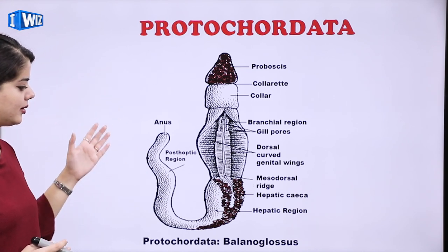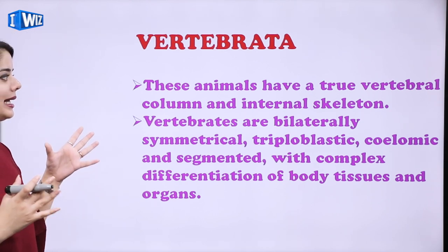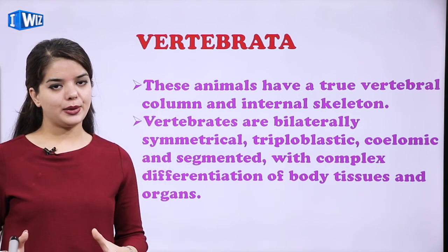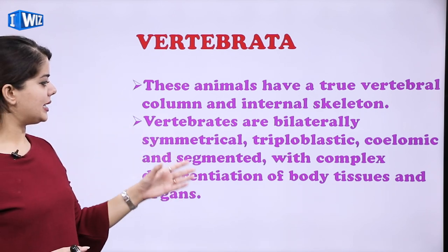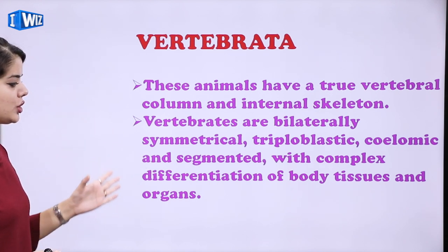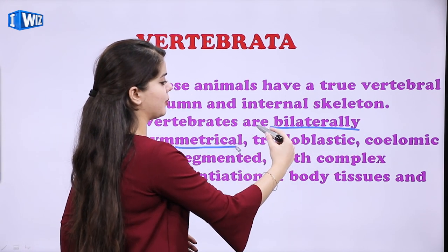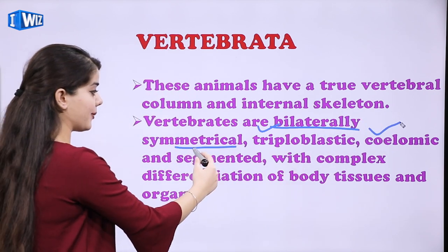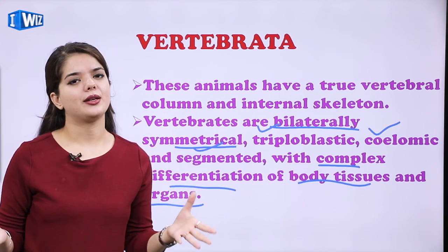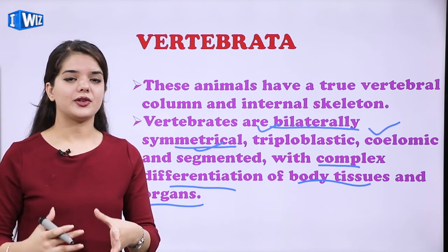Then we have Vertebrates. These animals have a true vertebral column and internal skeleton, and they do have a spine. Vertebrates are bilaterally symmetrical, triploblastic, coelomic, and segmented with complex differentiation of body tissues and organs. As we go further in the Animalia group, we see that each group has some additions, due to which animals are better evolved.